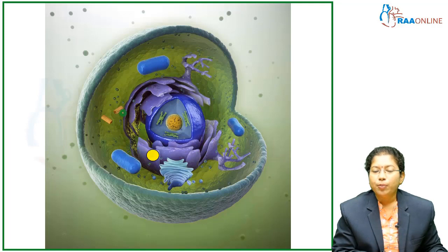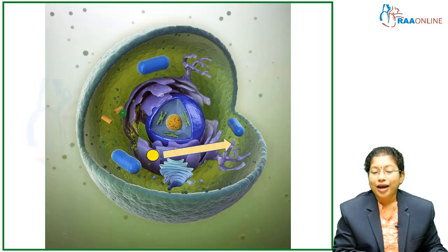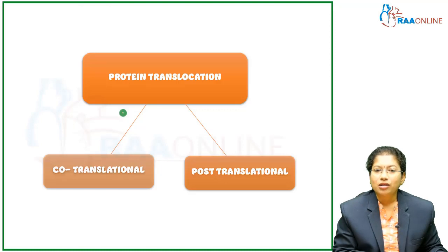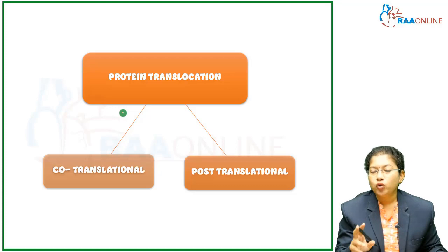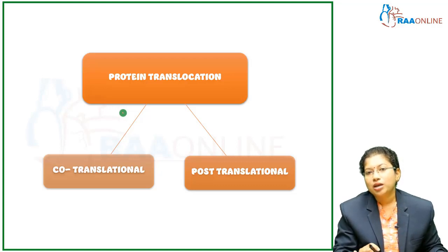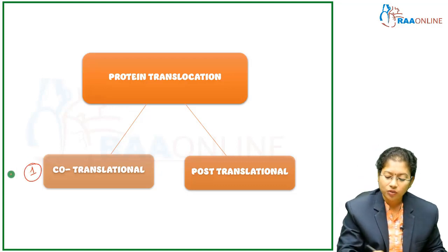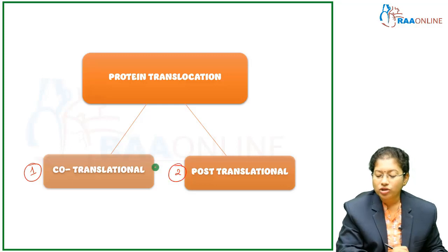For example, a protein synthesized in the ribosome can be moved to the cell organelles, to the membrane, or out of the cell. Protein translocation and protein targeting are done by two ways: one is co-translational, and the other is post-translational. There are two pathways — the first is the co-translational pathway, and the second is the post-translational pathway.